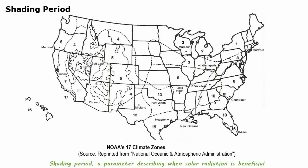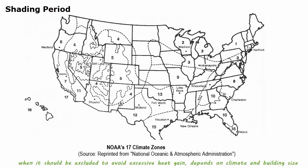Shading period, a parameter describing when solar radiation is beneficial and when it should be excluded to avoid excessive heat gain.